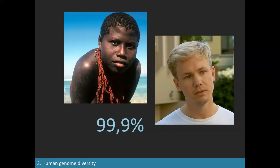Many DNA variants are cosmopolitan — present all over the world at different frequencies. For instance, blood group O is present in all continents. If you know a person is blood group O, you have no idea where they come from. The B blood group, conversely, is only present in Asia, Europe, and Africa — not in native Americans or Australians. About 80% of our DNA variants are like the O blood group — cosmopolitan.